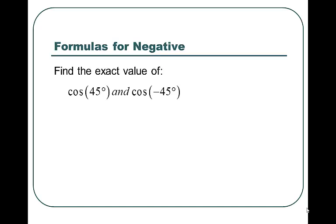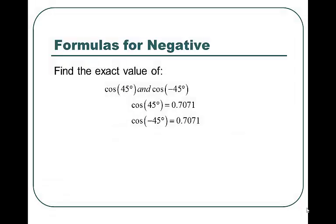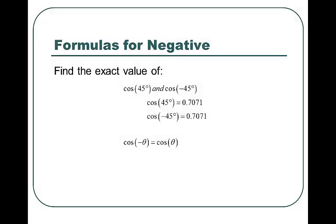The reason I say there's a little magic going on here is this is kind of amazing. You'll notice that the cosine of 45 degrees and the cosine of negative 45 degrees are exactly the same — there is no difference between them. That leads us to a theorem: the cosine of negative theta is equal to the cosine of theta. You can try this with a lot of different angles, like cosine of 100 and cosine of negative 100, and you'll always get the exact same value.